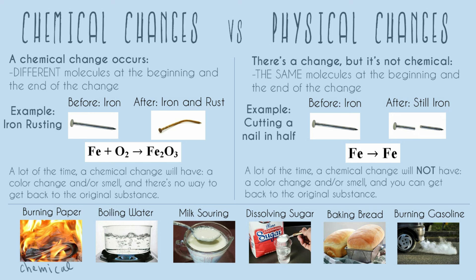And at the end, if you boil it all off, you'll have steam, which is again just water in its gas form — H2O. So you didn't break any of the bonds between oxygen and hydrogen, and you didn't create or destroy any molecules. You just had water before and after. That's why boiling water, or any phase change like melting, is all going to be physical.